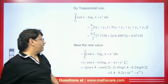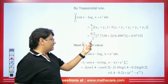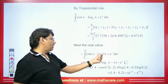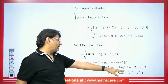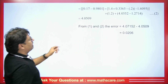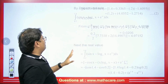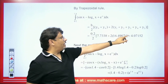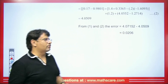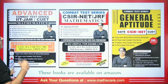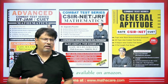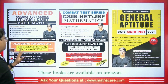If asked for the exact value, we perform actual integration of sin(x) − ln(x) + e^x from 0.2 to 1.4, applying appropriate integration formulas and the upper limit minus lower limit concept. The exact value comes out as 4.0509. The approximate value from the trapezoidal rule is 4.07152. The error is the difference between these two values. If you are preparing for CSIR Net, GATE, or IIT JAM exams, our books are available on Amazon and Flipkart.